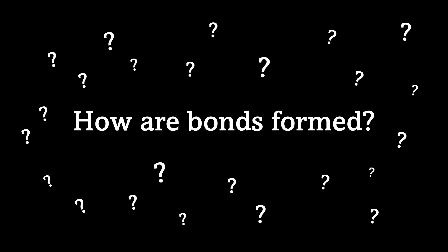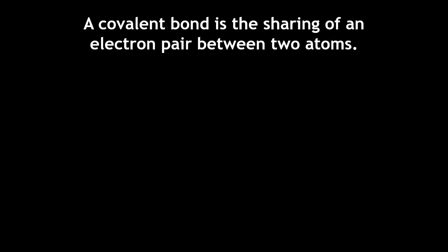Before we can discuss how hydrogen can bond to multiple atoms, we must understand how chemical bonds are formed. A covalent bond is the sharing of an electron pair between two atoms.